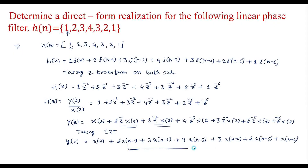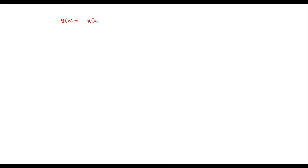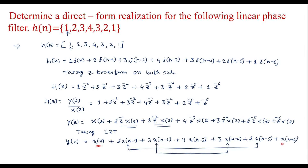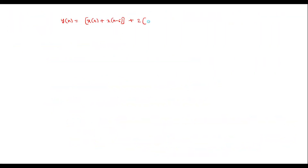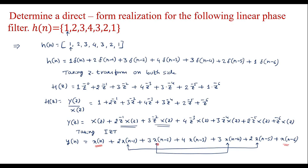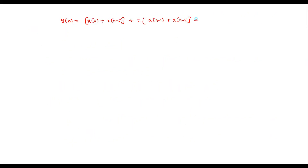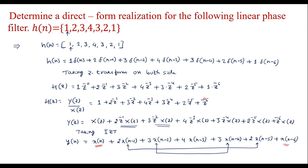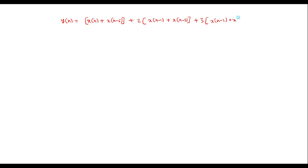Here we can see that the coefficients 2 and 2 are common, and 3 and 3 are common. So I will rewrite y of n by exploiting this symmetry: y of n is equal to x of n plus x of n minus 6, plus 2 times x of n minus 1 plus x of n minus 5, plus 3 times x of n minus 2 plus x of n minus 4, plus 4 x of n minus 3.